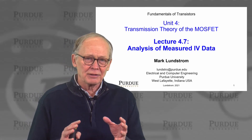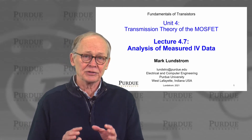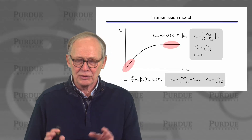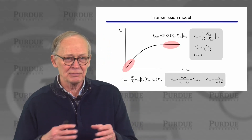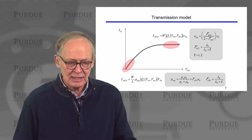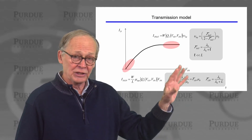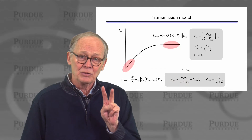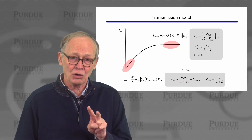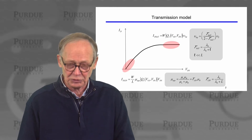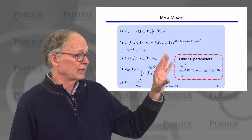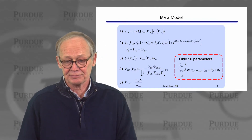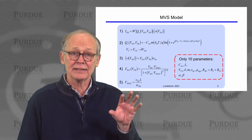Now that we have a virtual source model, let's apply it to some modern day transistors and see what we can learn. To review, we've developed a transmission model and expressed it in virtual source form. The transmission plays an important role in both the linear and saturated current. Our MVS model is expressed in terms of quantities like injection velocity and apparent mobility, and we can fit this model to measured data and extract those parameters.